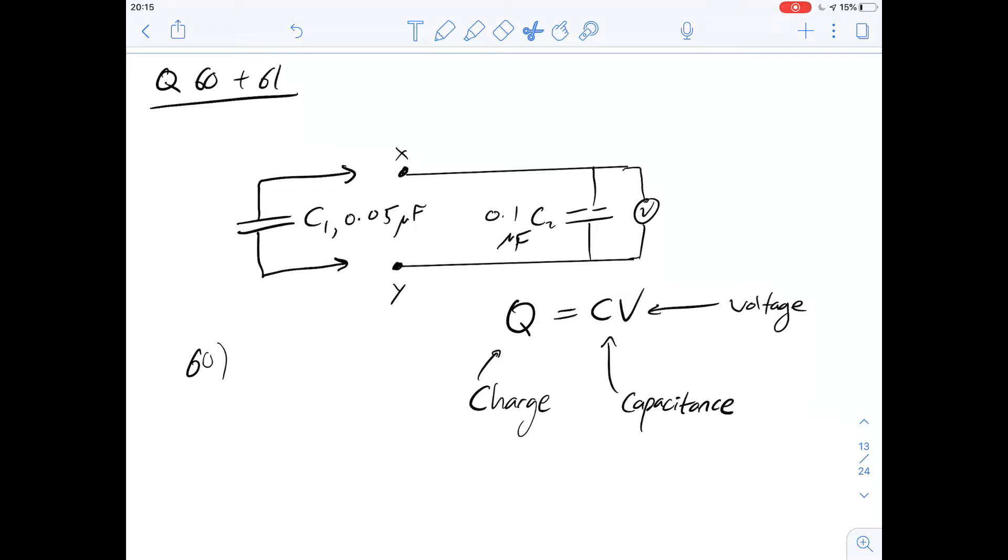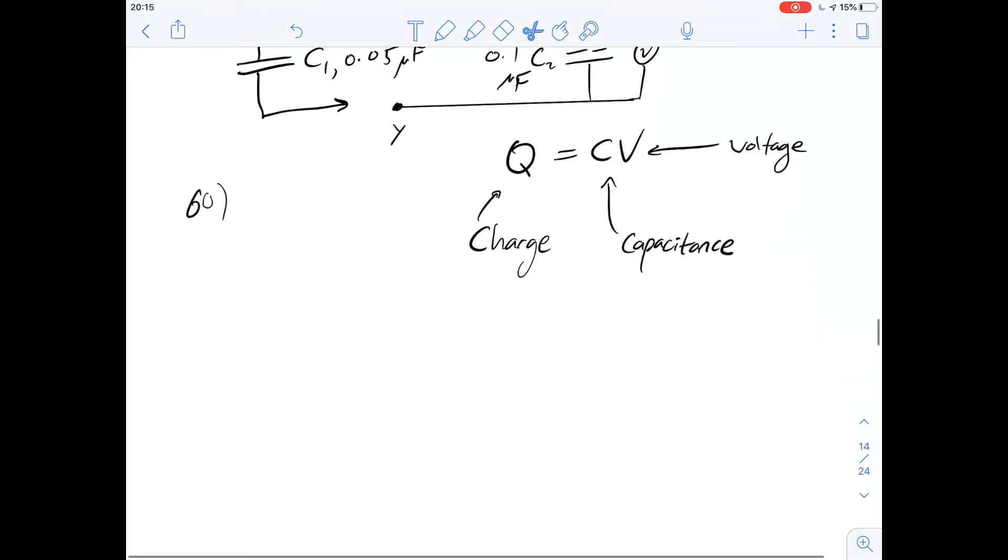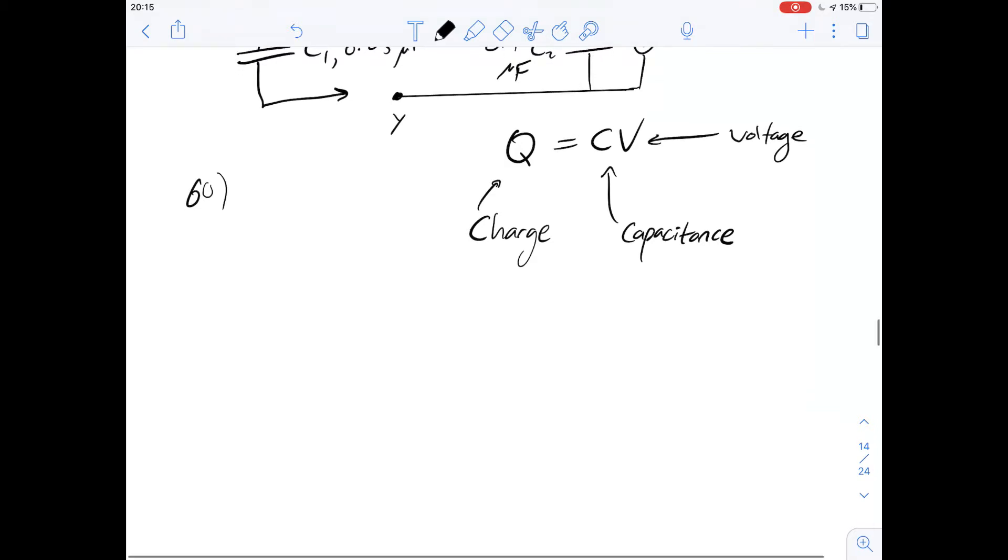So we've been given the equation we need here, Q equals CV. It's really just a matter of plugging in our numbers. We've got this capacitance, which we know for C1 is going to be 0.05 microfarads. So the capacitance for C1 is going to be 0.05 times 10 to the minus 6. The units are very important for this one.